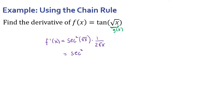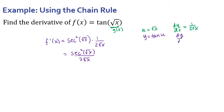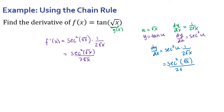So this would be secant squared of root x, all over 2 root x. If I did this the Leibniz way: let u equal square root of x, and y equal tangent of u. Then du/dx equals 1 over 2 root x, and dy/du equals secant squared of u. So dy/dx equals secant squared of u times 1 over 2 root x, and then substituting back in, u equals square root of x — you still get the same answer. Whichever method makes the most sense to you is what I'd recommend using.